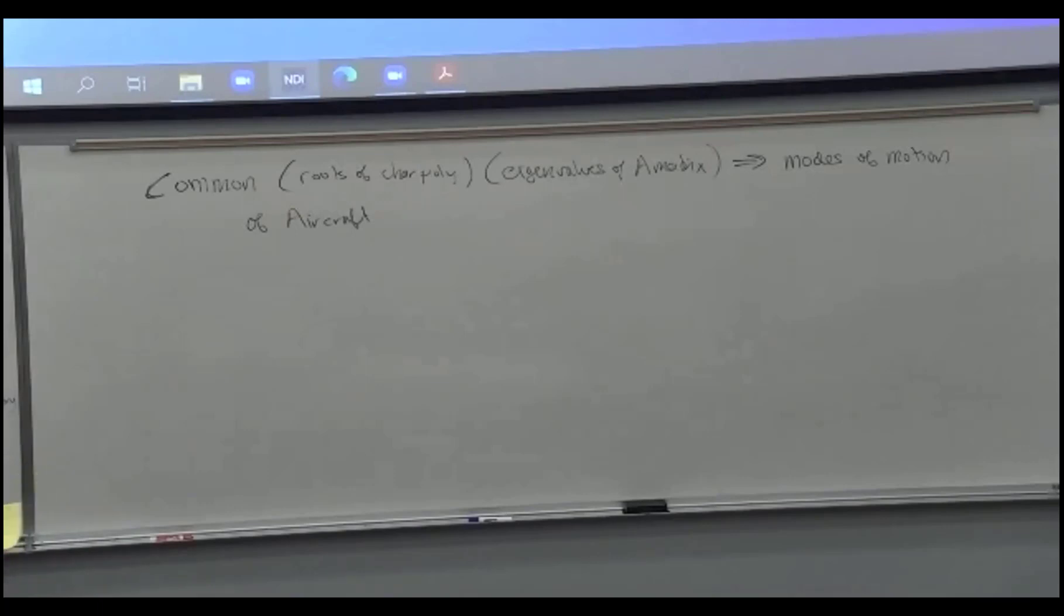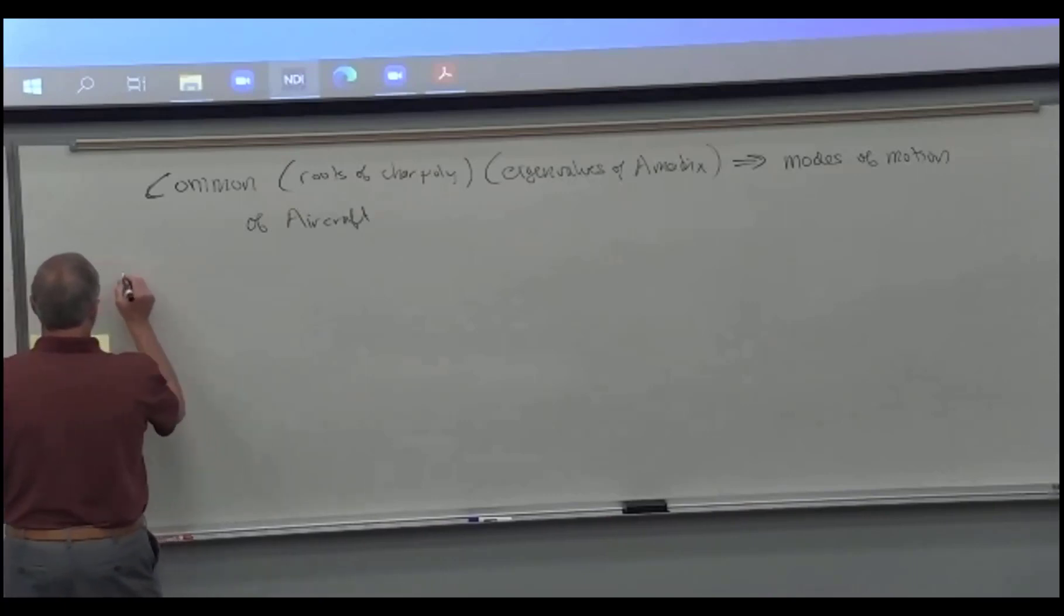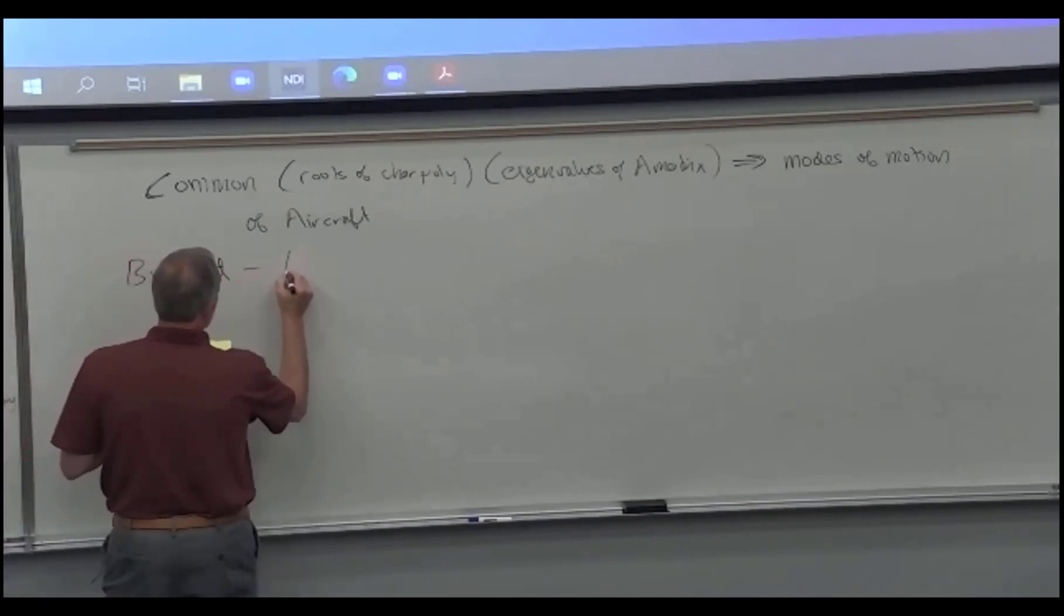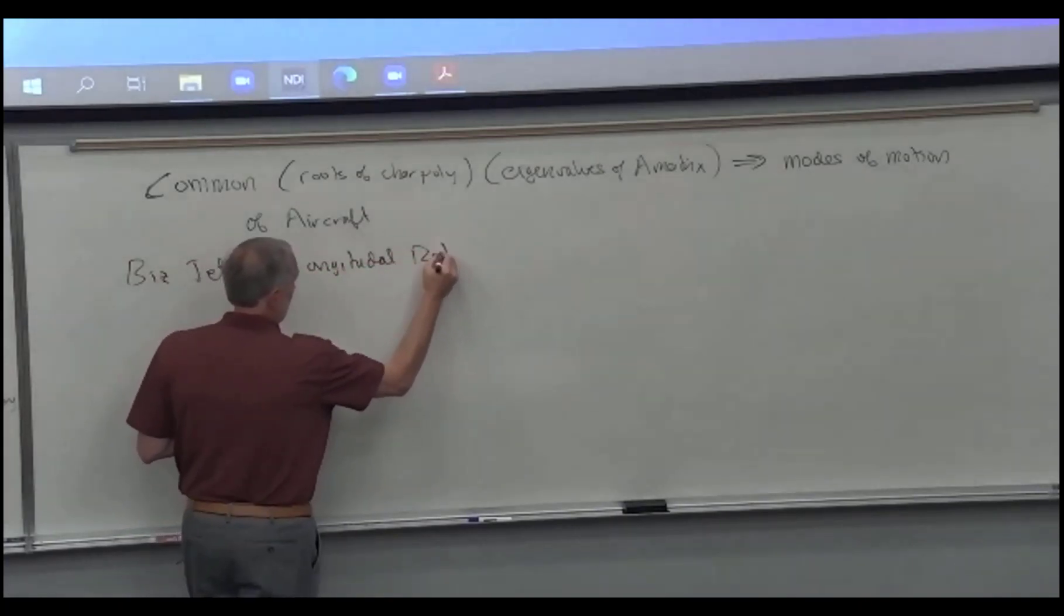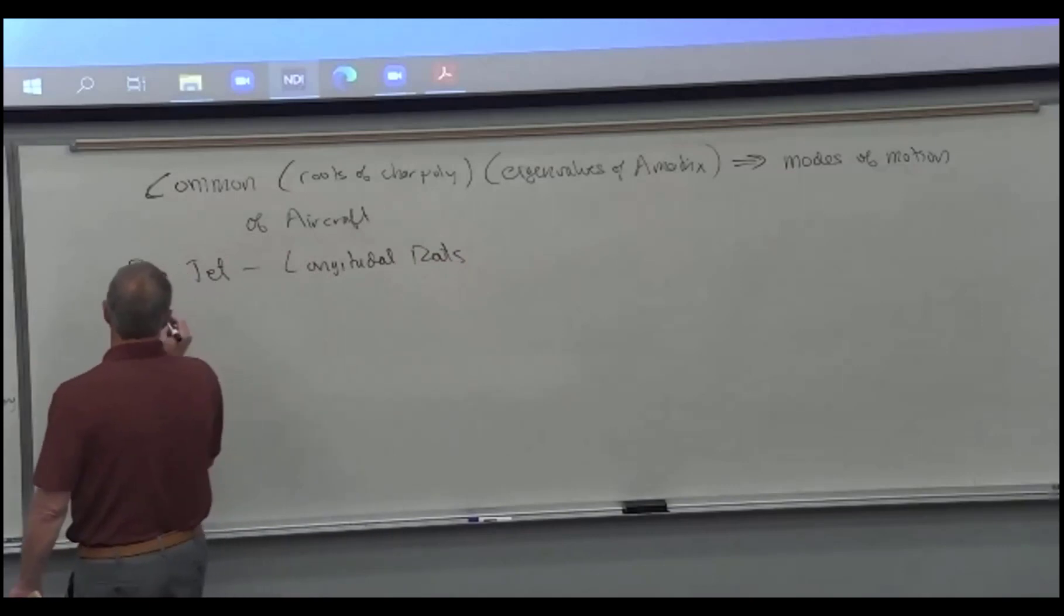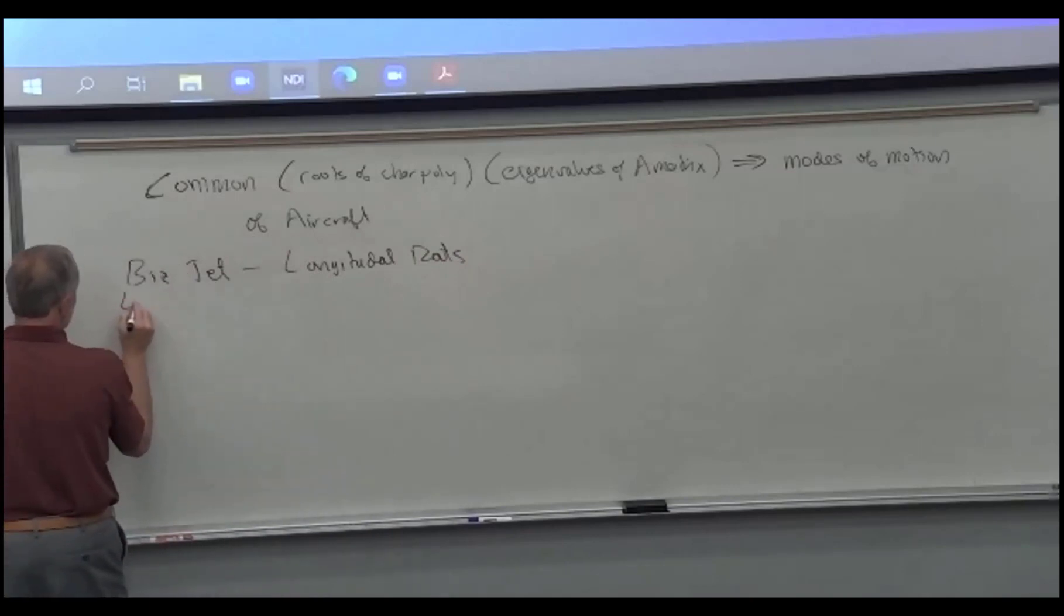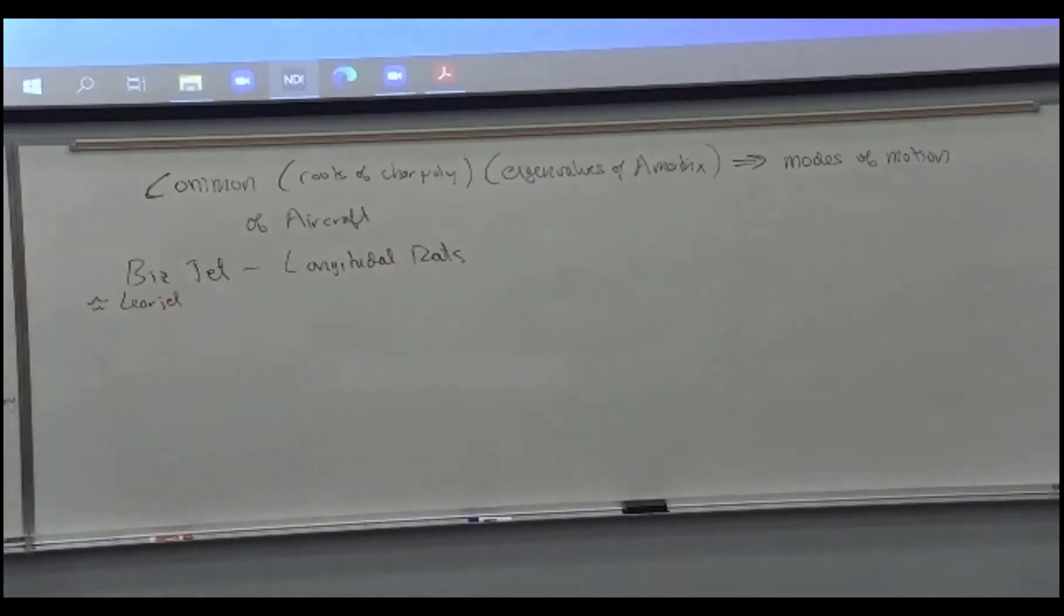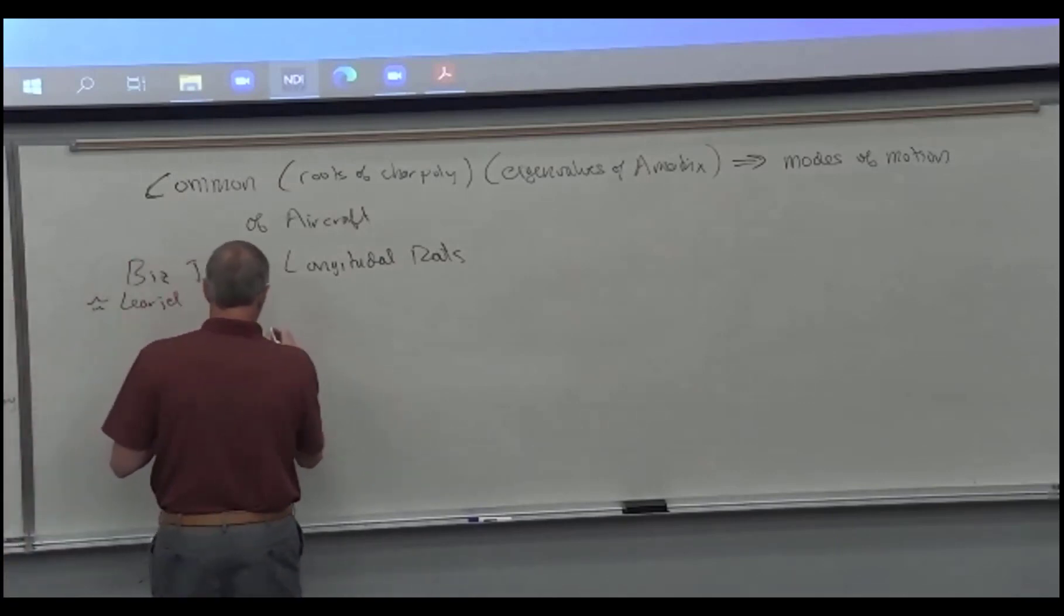There can be all kinds of different routes for an airplane, but for most conventional design airplanes, you get these kind of routes. So we're gonna use a BizJet and look at the longitudinal. This is from a different textbook, but it's a Learjet, not exactly a Learjet, it's an approximate Learjet model.